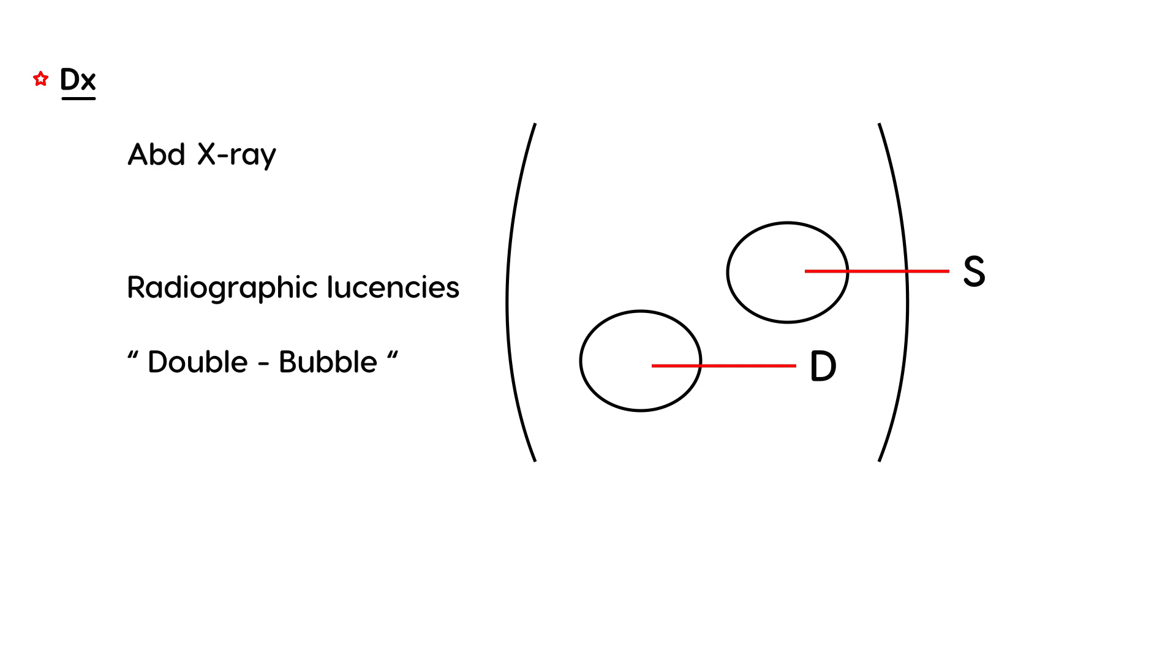I encourage you to look that up online to see what an abdominal x-ray looks like for a patient with duodenal atresia. The definitive treatment is surgical. You have to surgically go in and correct the atresia and create a lumen so that there can be a passageway.